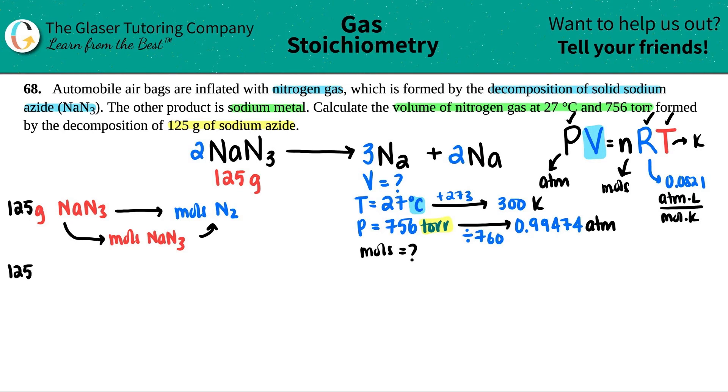So let's go for it. 125 grams of NaN3. We're just converting, so times by the ratio. Throw the unit you don't want on the bottom, grams of NaN3, and then moles of NaN3 up on the top. Gram to mole of the same compound is always the periodic table. One mole on the periodic table is whatever the compound is. So let's see. Na 22.99 plus 3 times 14.01, 65.02. Cancel out the grams.